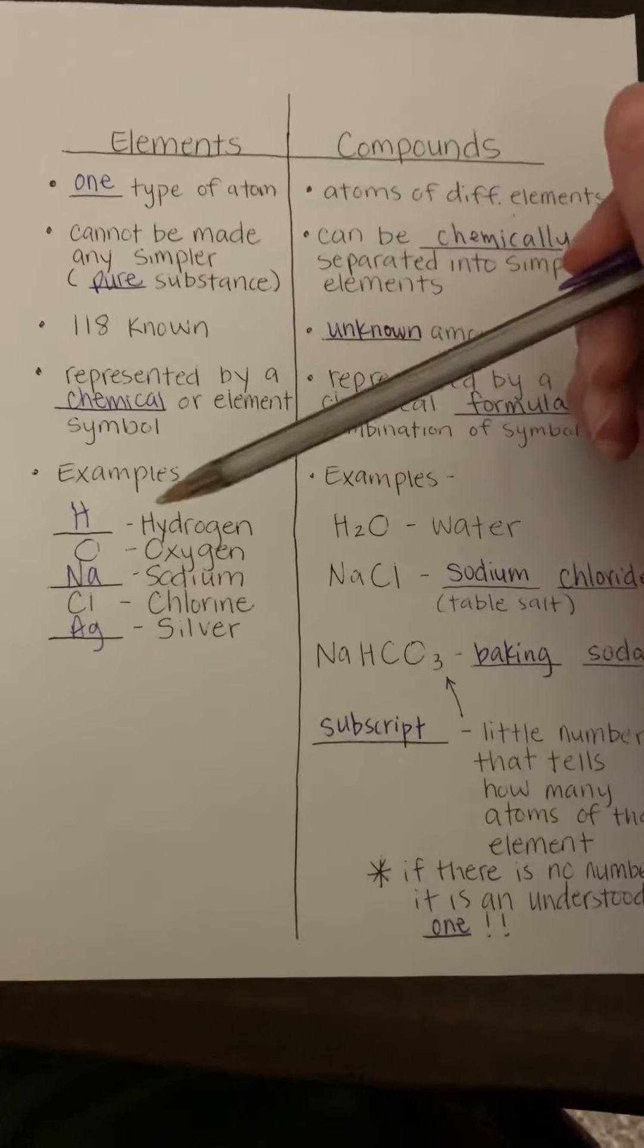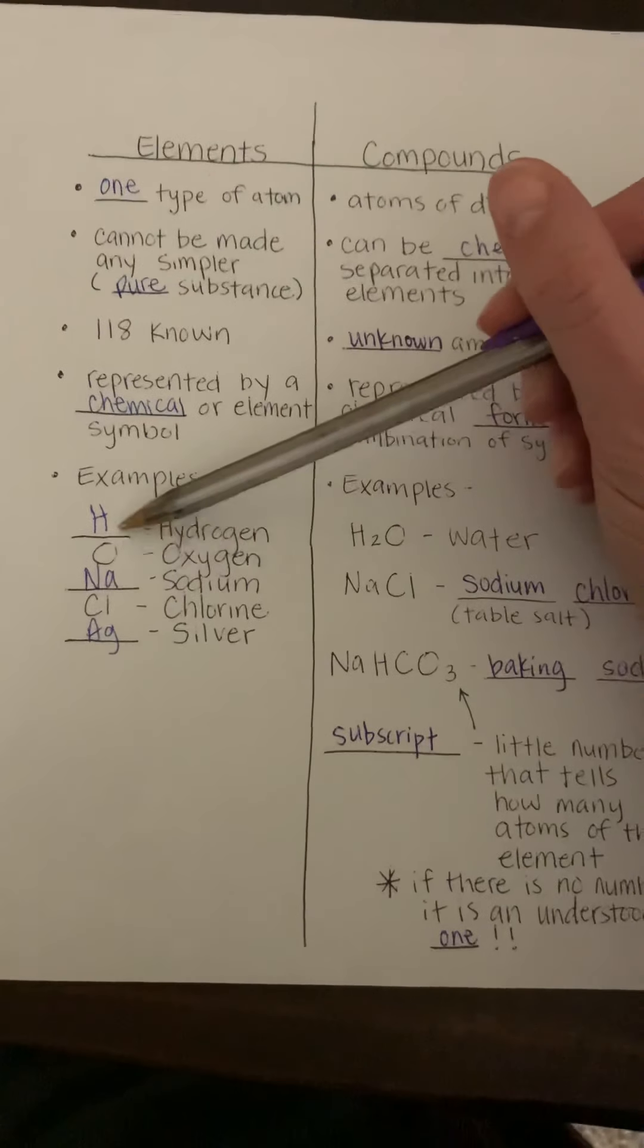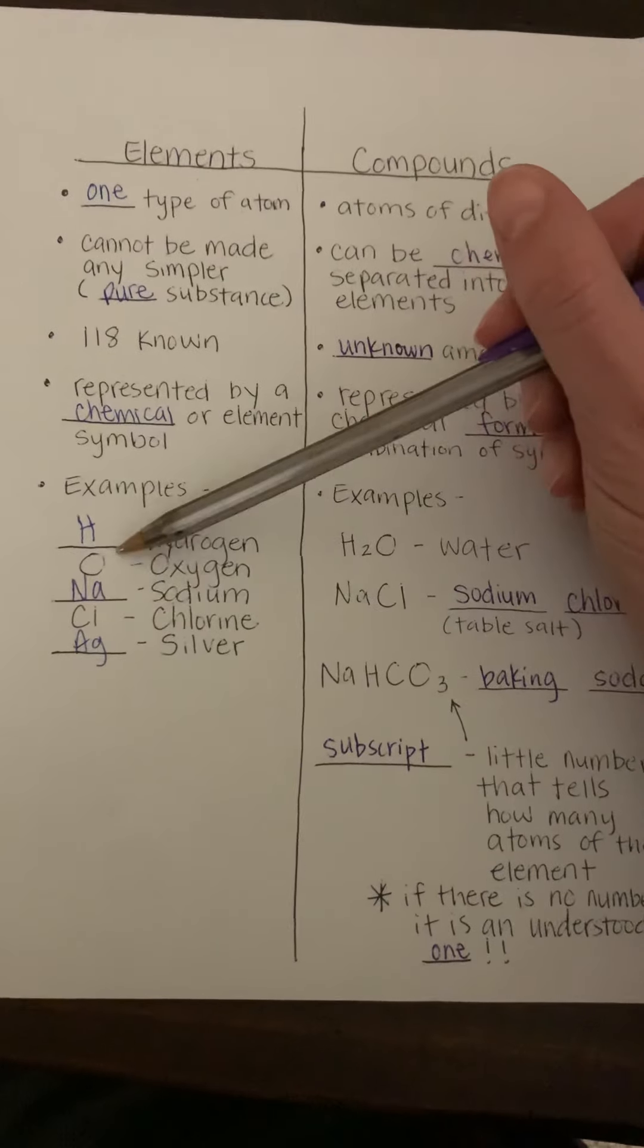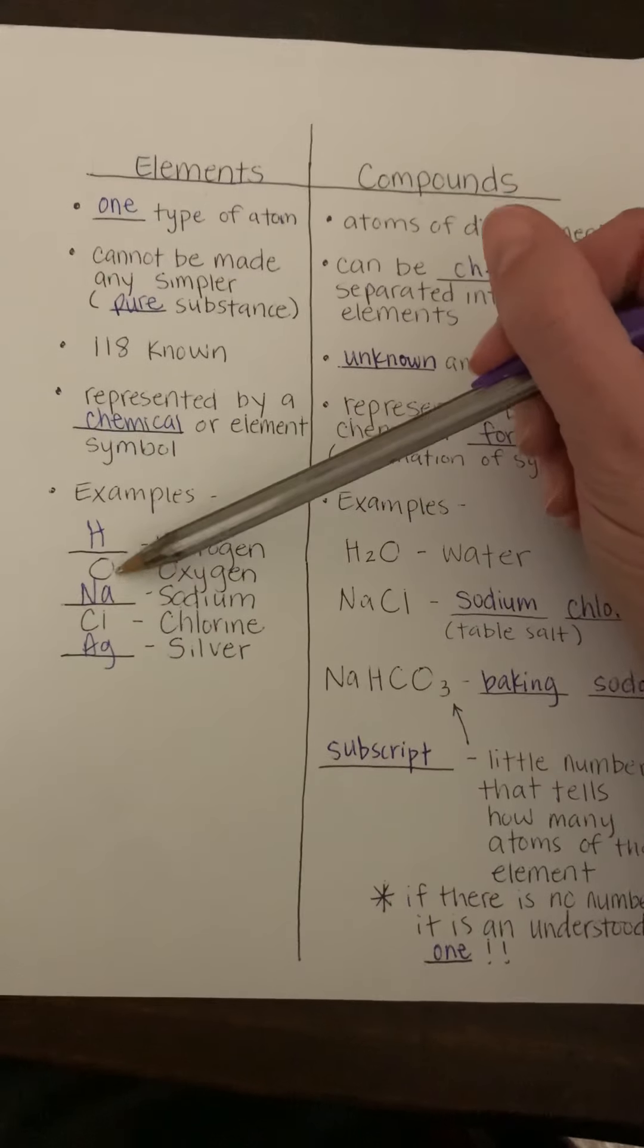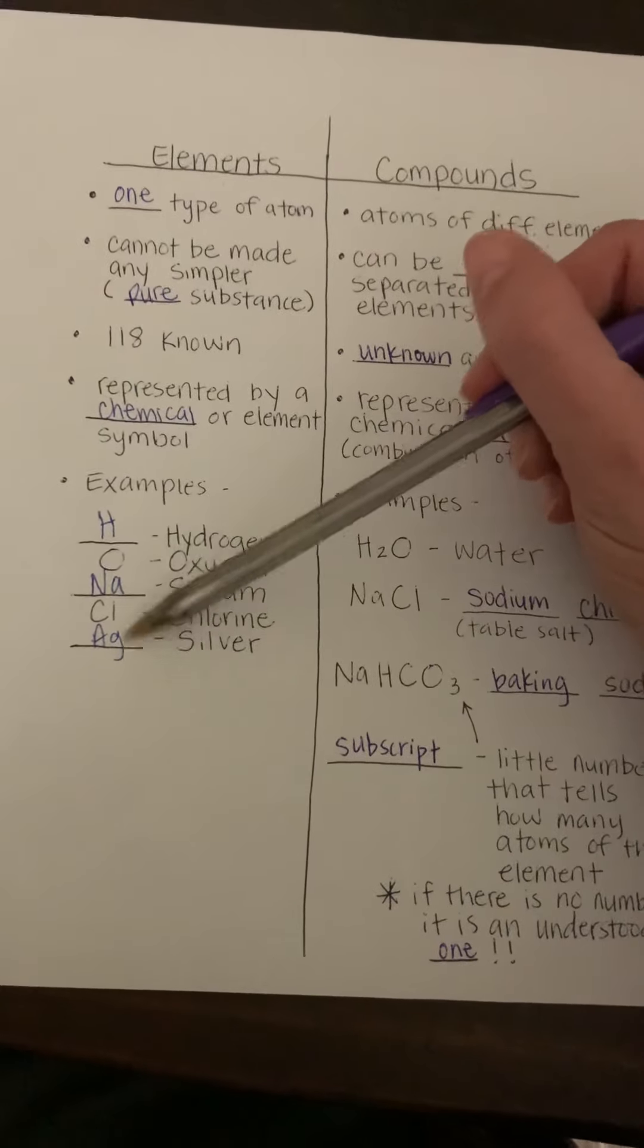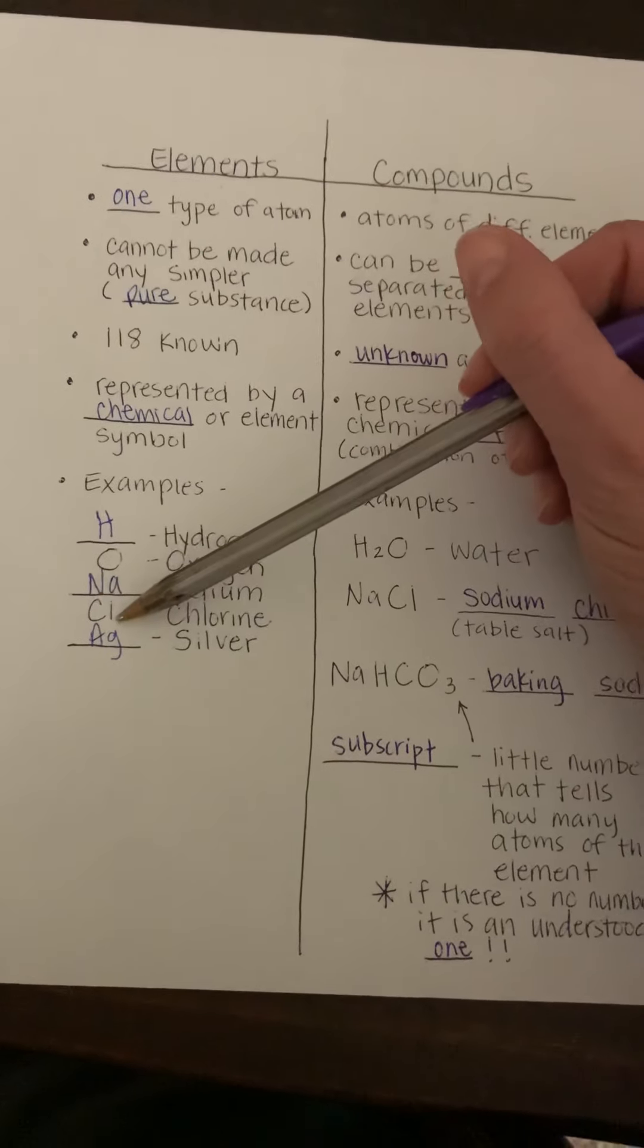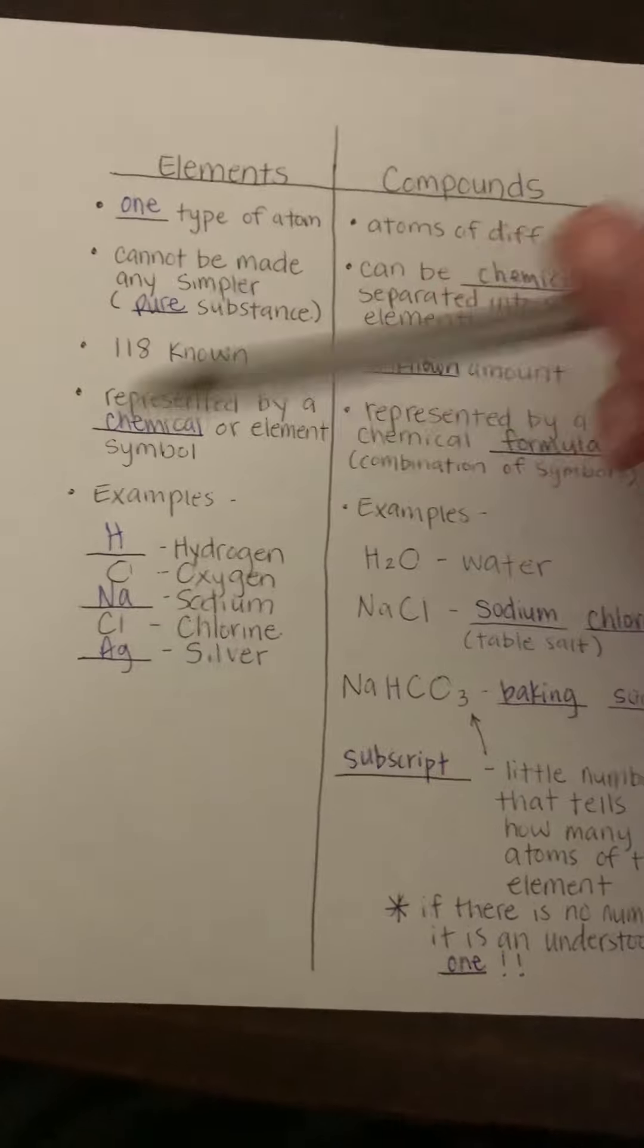So here's just some examples of some different elements and their symbols. And remember, it's very important to follow the correct rules for writing your symbols: if there's one letter, you have to write a capital, and if there's two letters, you have to write a capital and a lowercase - capital lowercase, capital lowercase.